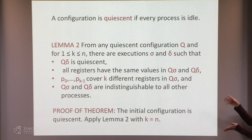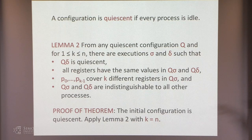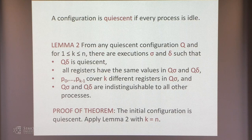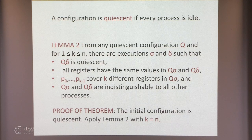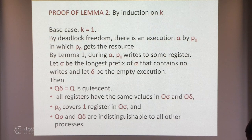Lemma 2 is the workhorse. We'll choose the fact that there are K different registers covered. For each K, in particular for N, we can get that. This will be an induction and we'll build it up. As long as K is less than N, we can extend the induction one more step. The proof of Lemma 2 is by induction on K, and the base case is K equals 1.